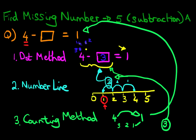And that is how we do find the missing number of numbers up to 5 with subtraction using the dot method, the number line and the counting method.